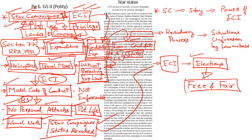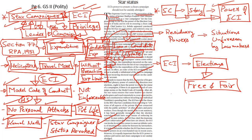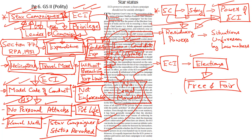After the Election Commission revoked the star campaigner status of Kamal Nath, the Supreme Court intervened and issued a stay order on the revocation. According to the editorial, this is a direct intervention of the judiciary with the autonomous powers of the Election Commission. It is true that the model code of conduct does not have any legal mandate of its own. Since it is not backed by any law, it is not enforceable by the Election Commission. However, the Election Commission has always cited one of the observations of the Supreme Court itself with regard to the invocation of residuary powers.